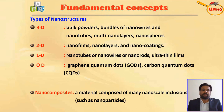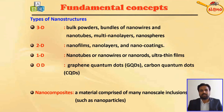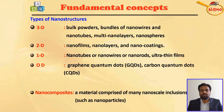Depending on their dimensions, nanostructured materials can be divided into four classes: 3D, 2D, 1D, and zero-dimensional materials. Three-dimensional materials are those in which all three dimensions — length, breadth, and height — are outside the nano range. Examples include bulk powders, bundles of nanowires, bundles of nanotubes, multi-nano layers, and nanospheres.